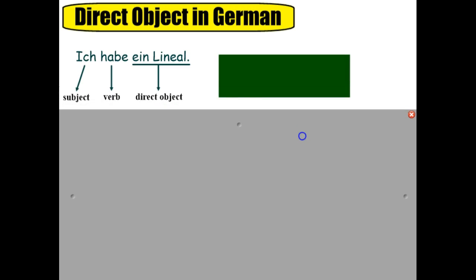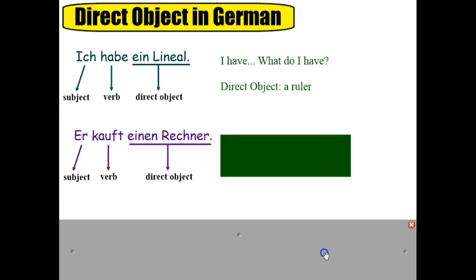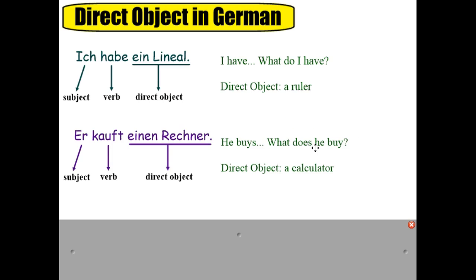A reminder about the direct object in German: 'Ich habe ein Lineal' — I have what? A ruler is the direct object. 'Er kauft einen Rechner' — he buys what? A calculator — that is the direct object of the sentence. 'Der Rechner' is masculine, so it would be 'einen Rechner,' using an indefinite article in the accusative case.